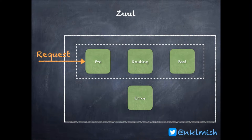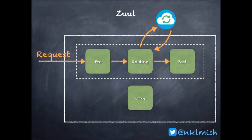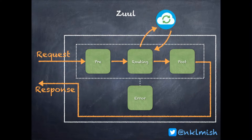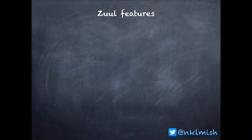When an HTTP request comes to Zuul, it first goes through the pre-stage where you can do logic like authenticating the client — you can write any number of pre-filters. Once pre-stage is done, the request gets routed in the routing stage, where you can implement dynamic request routing. Once routed, the post-stage comes into action where you can add default HTTP headers or expose health metrics for your microservices. Then the response is handed back to the client.